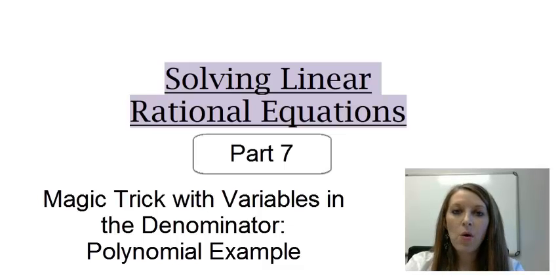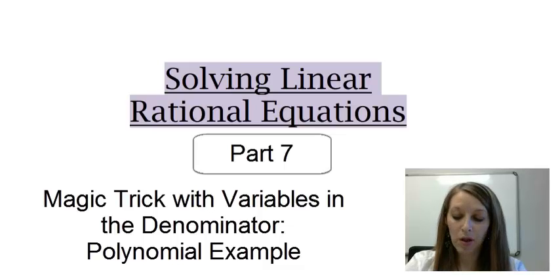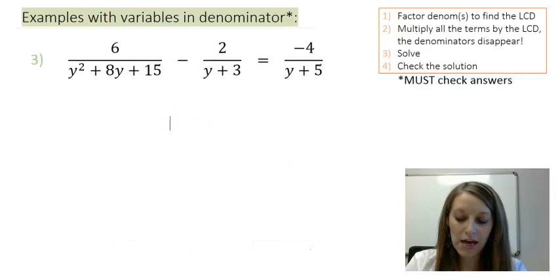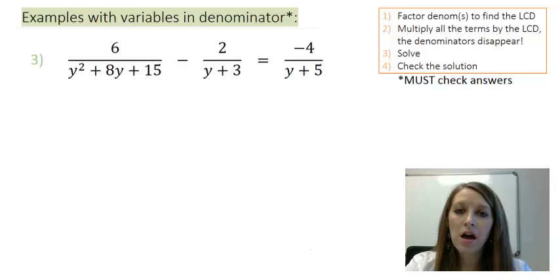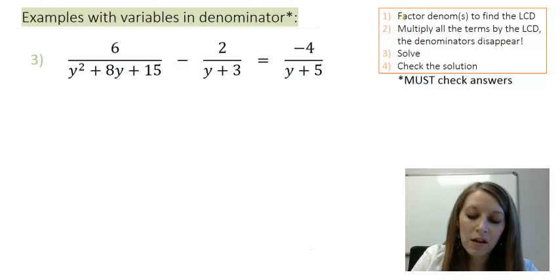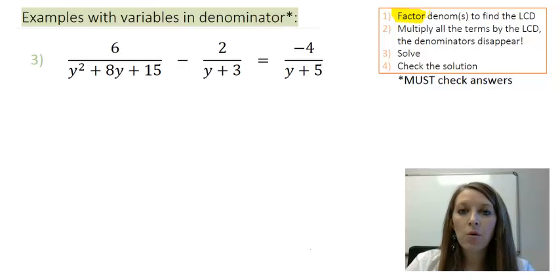This is my last video on solving linear rational equations. We are working on examples in which we have variables in the denominator, and I have one more example of this. This is a pretty typical example because it is more in polynomial form rather than any of the other examples so far. So the emphasis on this one will definitely be on factoring the denominators, where we've gotten away with not really having to do that in our last few examples.